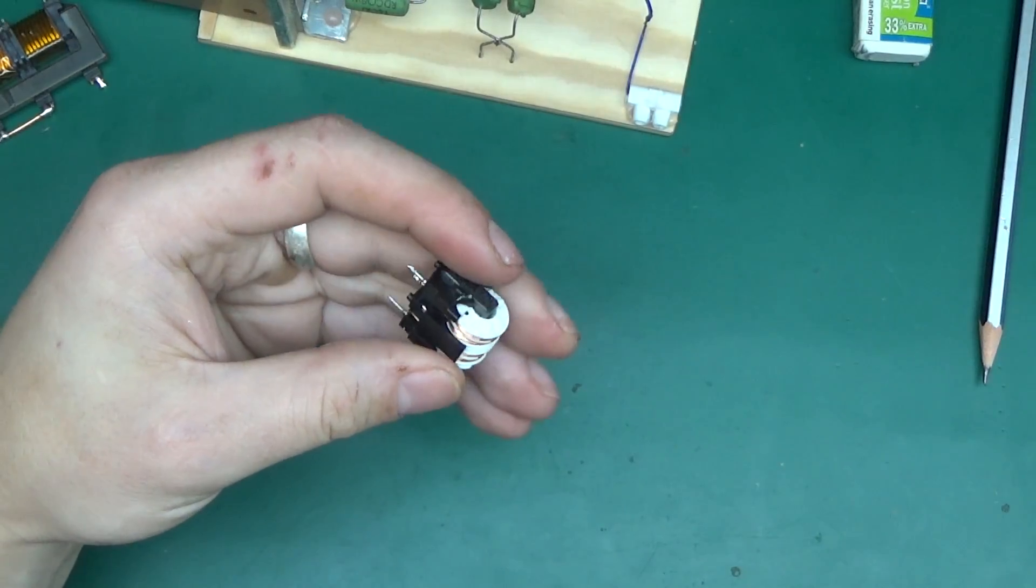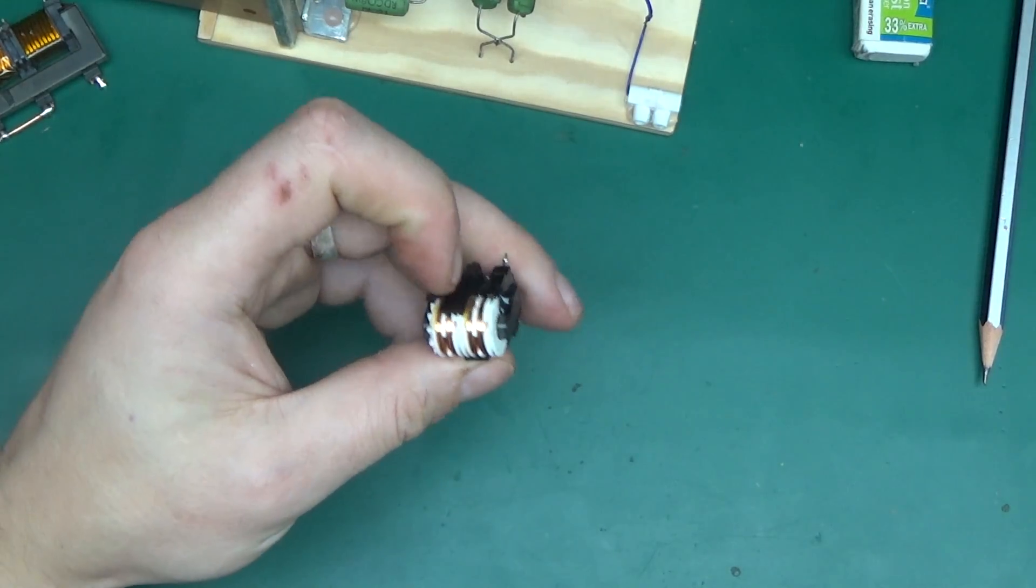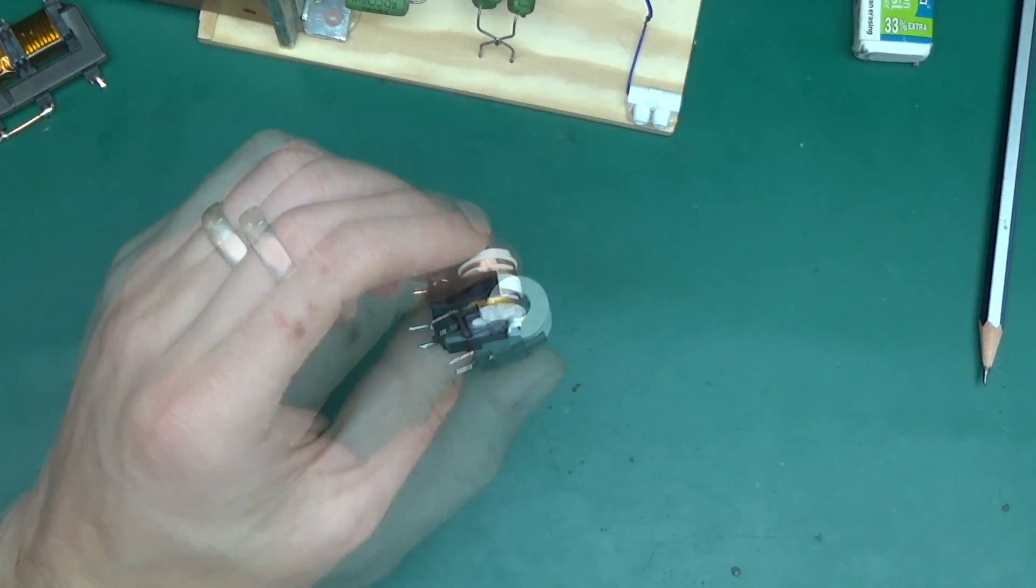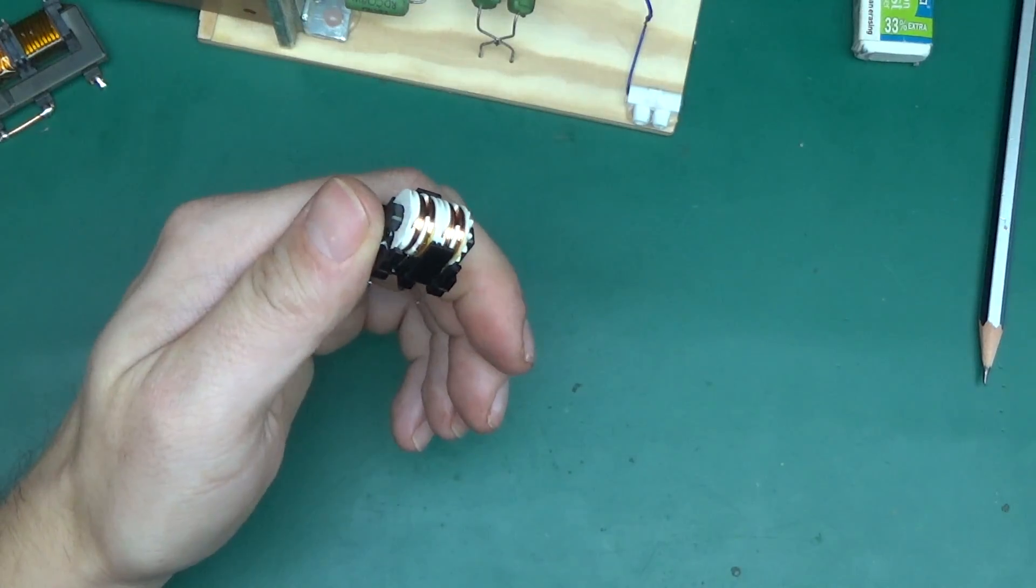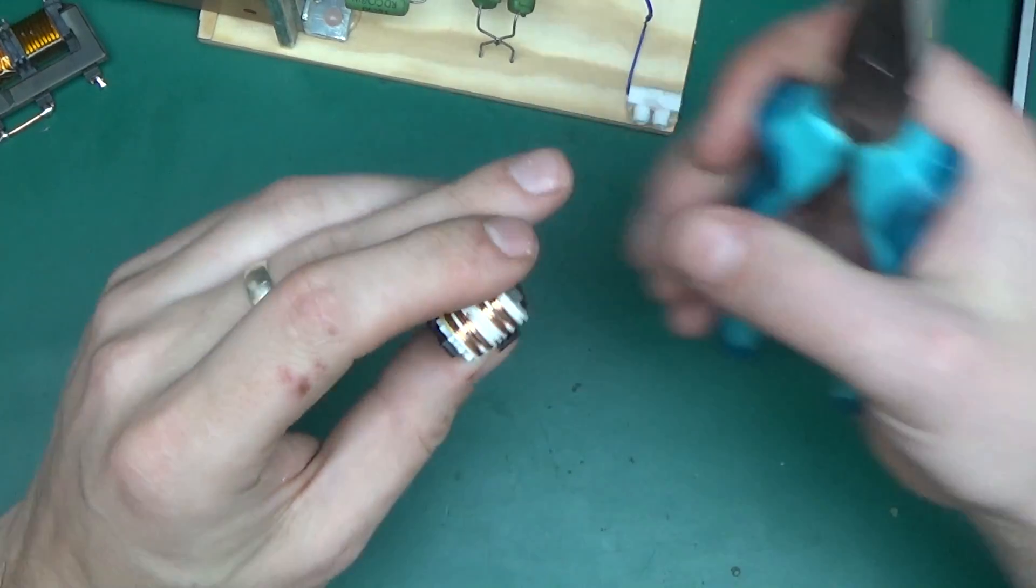Here we have a common mode choke, a part that's present in quite a lot of devices. I've built previously a joule thief using those. Today we're going to take it apart and use the wire to make the feedback winding onto here.